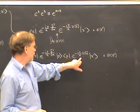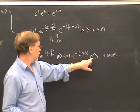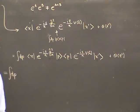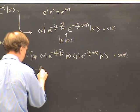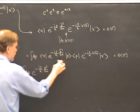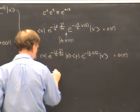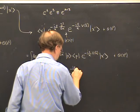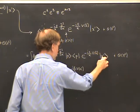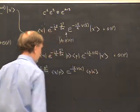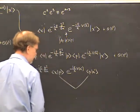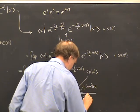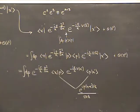The result becomes: integral over P of e to the minus iε over ℏ times P squared over 2M (now P is just a number, the variable of integration), times e to the minus iε over ℏ times V(X′), times the matrix element ⟨X|P⟩ times ⟨P|X′⟩. The two remaining position-momentum matrix elements together give e to the iP(X minus X′) over ℏ, divided by 2πℏ.